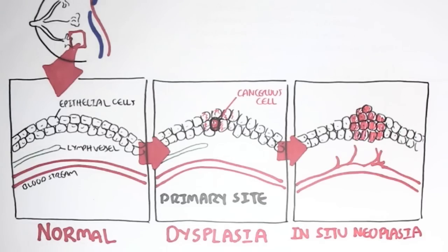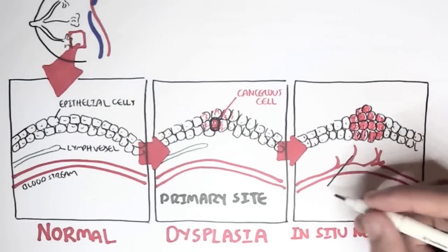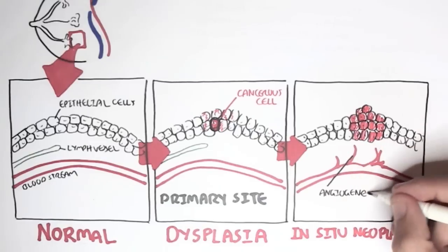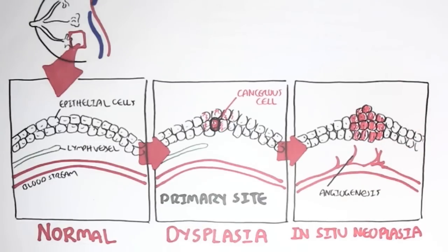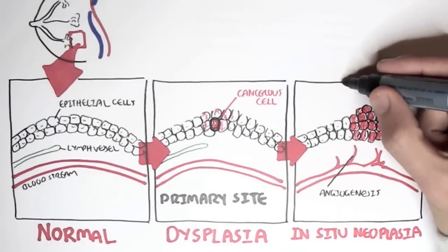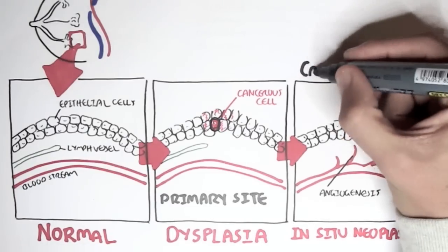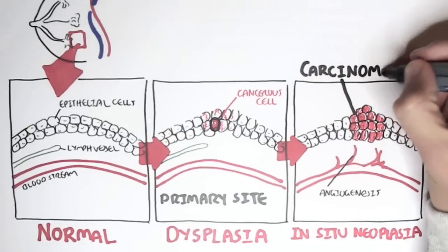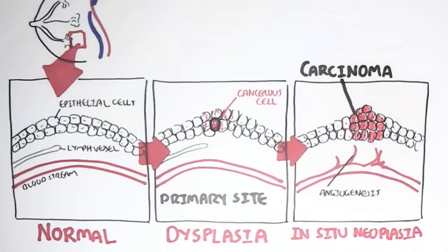Here, this red bulge — we have all these cancer cells forming growth, forming a tumor, a neoplasia. We can also see changes in blood vessels. Through angiogenesis, new blood vessels are formed due to the secretion of chemicals by the cancer cells. This lump of cancer cells is known as a tumor, a neoplasia, but we can also refer to it as a carcinoma.